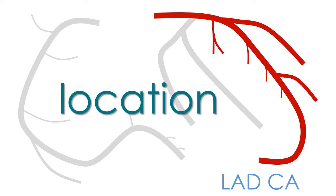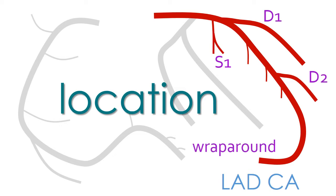This slide shows the basic anatomy of the LAD coronary artery. We represent the first septal branch, the first and second diagonal branches, and the wraparound segment of the left anterior descending coronary artery. This wraparound segment may exist or not, and when present, it may have electrocardiographic consequences.